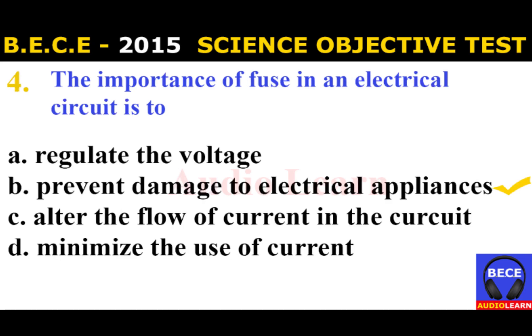Number 4: The importance of a fuse in an electrical circuit is to A. Regulate the voltage, B. Prevent damage to electrical appliances, C. Alter the flow of current in the circuit, D. Minimize the use of current. The answer is B. Prevent damage to electrical appliances.